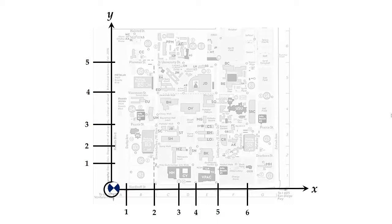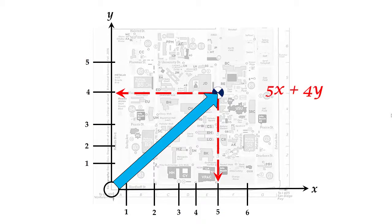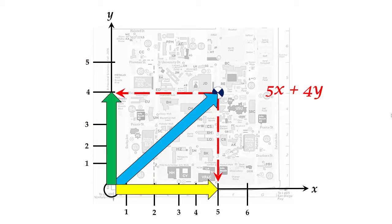Next, let's think about displacement in two dimensions, where we're moving not only in an x-dimension but also in a y-dimension. Just like denoting the position, we need to denote the displacement using two coordinates — one coordinate for each dimension. We can draw an arrow from the origin to our particular position, then drop a line down to the x-axis and across to the y-axis, denoting that final position as having both an x and a y coordinate.